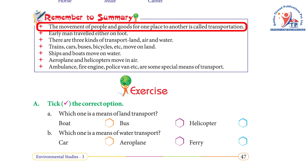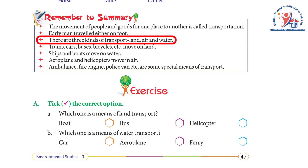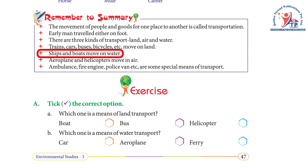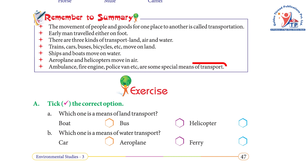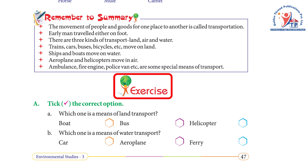Summary: The movement of people and goods from one place to another is called transportation. Early men traveled on foot. There are three kinds of transport — land, air, and water. Trains, cars, buses, and bicycles move on land. Ships and boats move on water. Aeroplanes and helicopters move in the air. Ambulances, fire engines, and police vans are special means of transport.